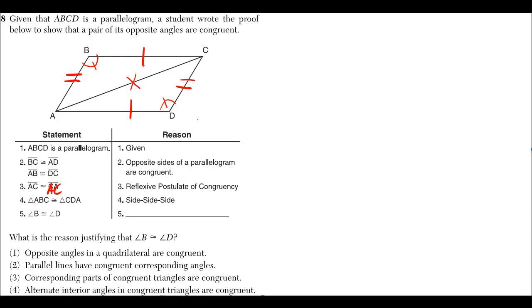And the reason why that's true is because those are corresponding parts of congruent triangles. And whenever you have corresponding parts of congruent triangles, they're congruent. How do you find the corresponding parts? You find the angles that are across from the same side. Angle B and angle D, they're across from the same side. They're both across from that side AC.